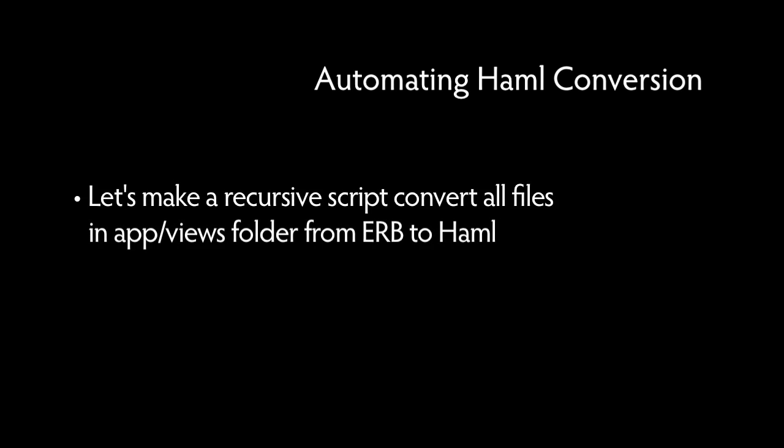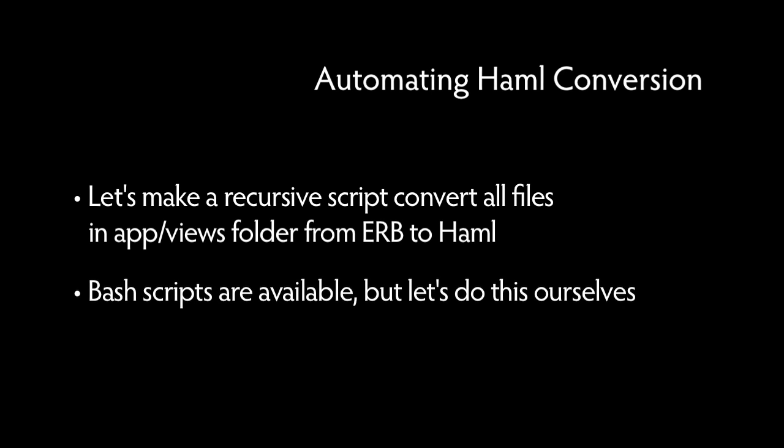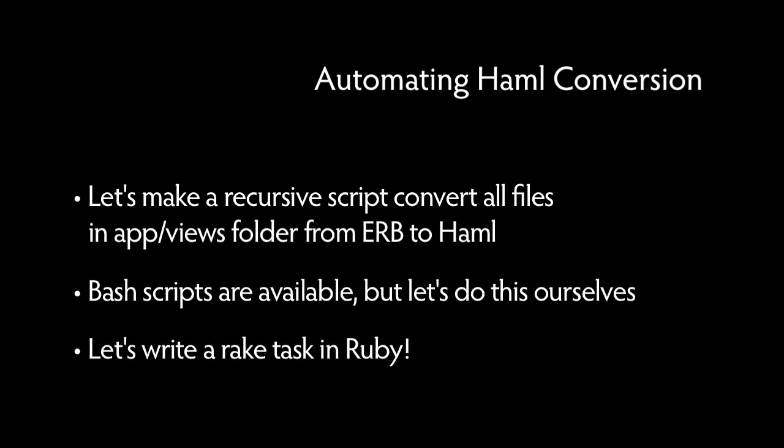Of course, this can be time-consuming going into each directory to rewrite every page, so instead let's make something that will recursively look into our app/views folder and rewrite all of our ERB files as Haml. There are bash scripts out there, but just copying and pasting one and hoping it works isn't a practice we'd advocate. Since Ruby code is more familiar and more readable, let's write a rake task to do it ourselves.